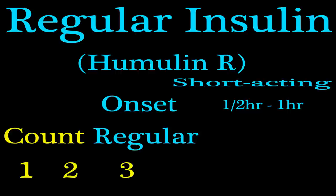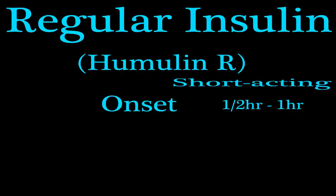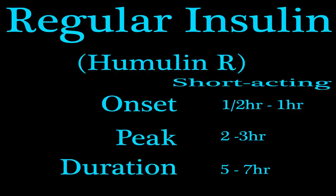For the peak and duration of regular insulin, count the letters: one, two, three — but not four, five, six, seven. We stop at seven because 'regular' has seven letters. The L is in the fifth place. The onset was half an hour to an hour; peak is two to three; for duration skip four, then five to seven. So duration is five to seven hours.